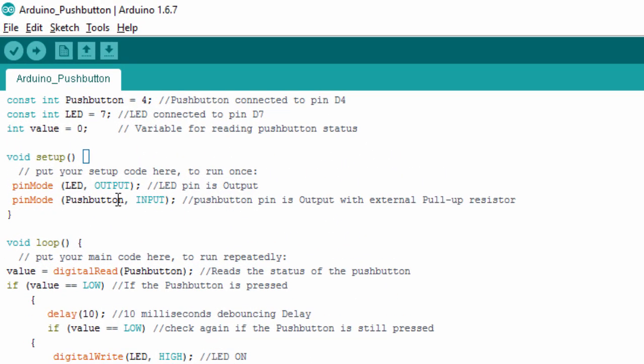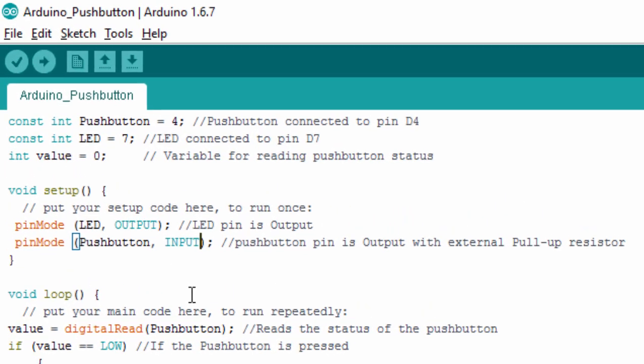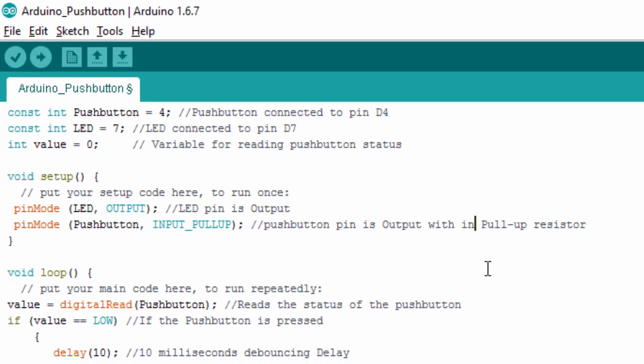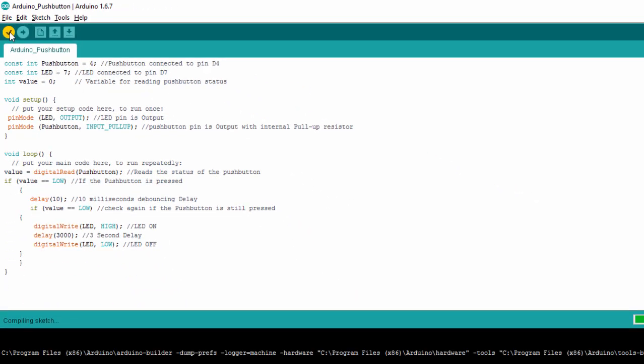And in our code, all you need to do is to specify that you're going to use a pull-up resistor on this pin. To do that, you're going to say pin mode input pull-up. So this is going to use an internal pull-up resistor. Verify again.